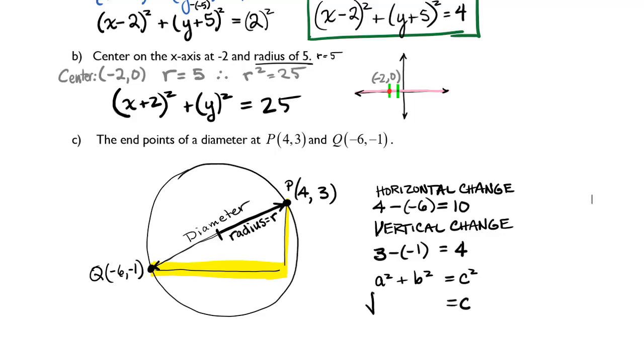So that gives me c is equal to the square root of a squared plus b squared. If we call this a, a is 10. If we call this b, b is 4. So 10 squared plus 4 squared, the square root of 116 is equal to c, and that's the distance from P to Q.